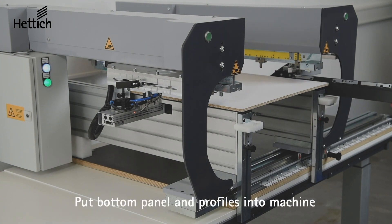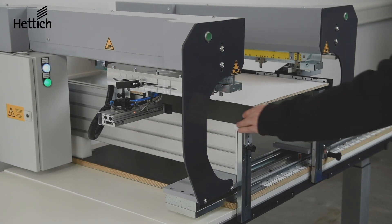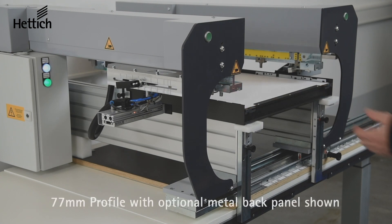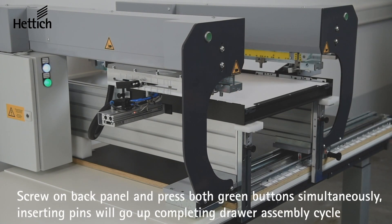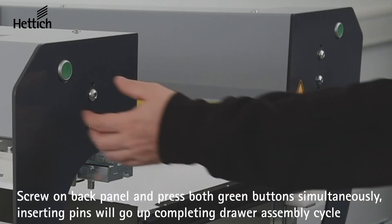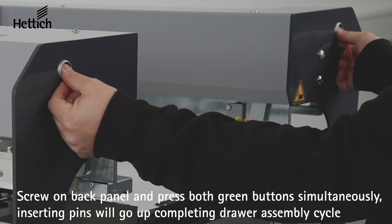Now you're ready to assemble the drawer. Slide in the bottom panel and profiles, then follow the same procedure as before. Press both green buttons until the machine goes down and the green light goes off. Screw on your pre-drilled wood panel and press both green buttons to finish the cycle.